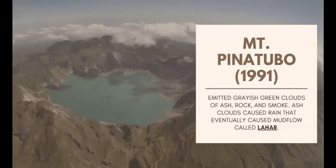During the 1991 eruption, Mount Pinatubo emitted grayish-green clouds of ash, rock, and smoke. Ash clouds caused rain that eventually produced mud flow called lahar. Lahar moved downhill, behaved like wet concrete, and buried everything in its path. Mount Pinatubo wiped out several towns with its lahar flow.